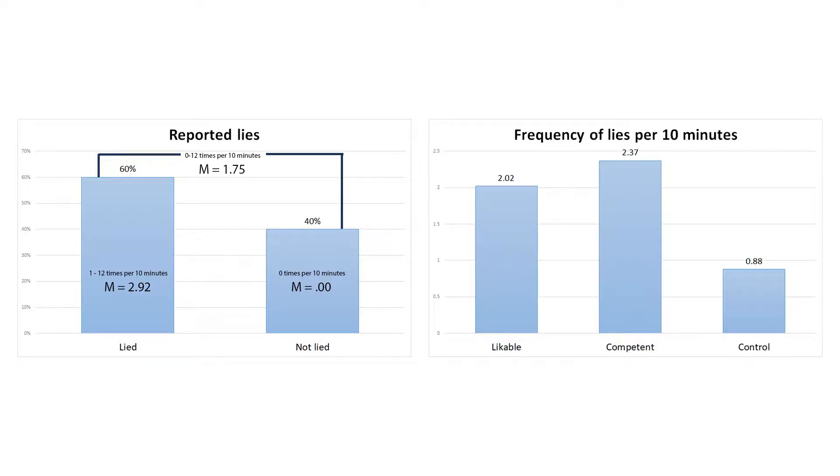Because if you exclude people who haven't told any lie, those who did lie told on average 2.92 lies per 10 minutes. So, this number is only for those who have lied during the experiment, while excluding those who have not.